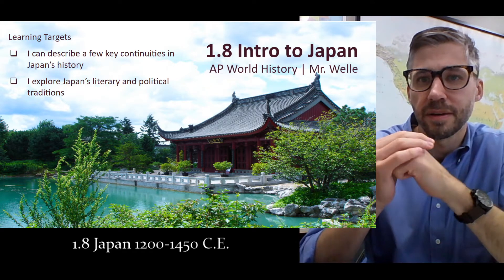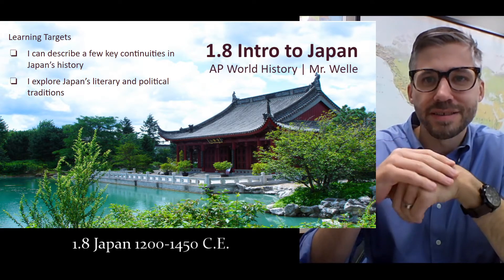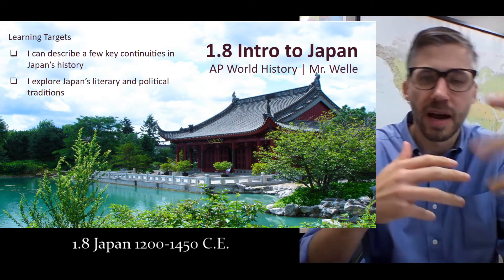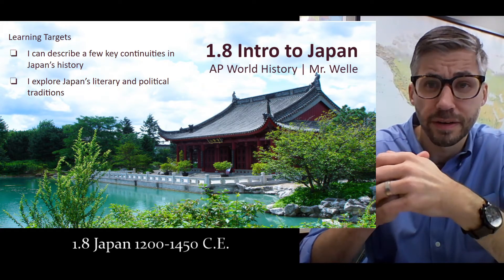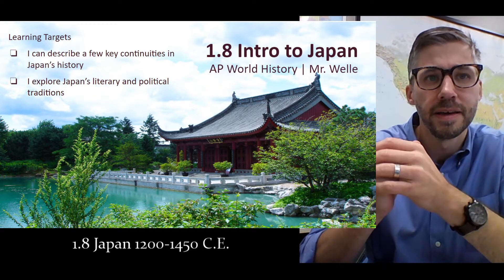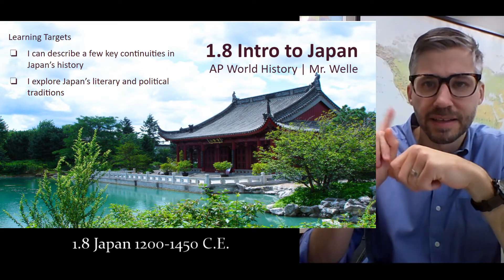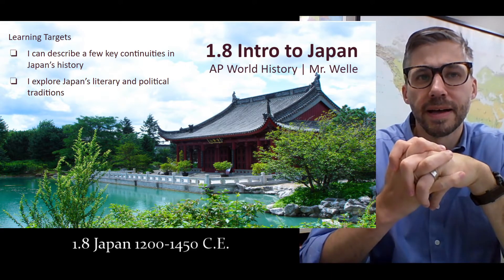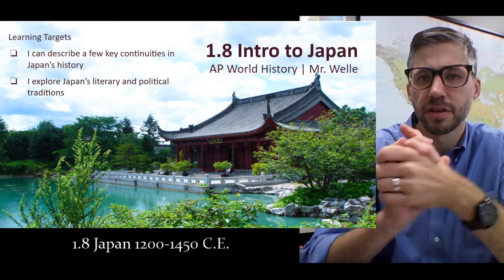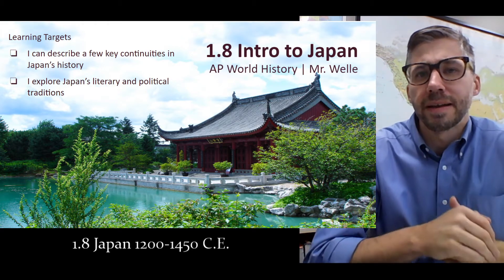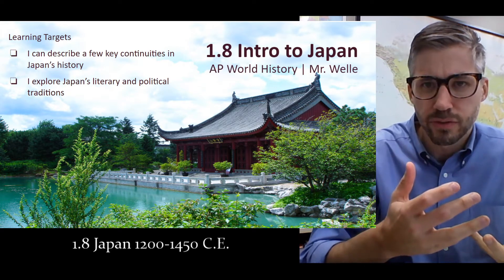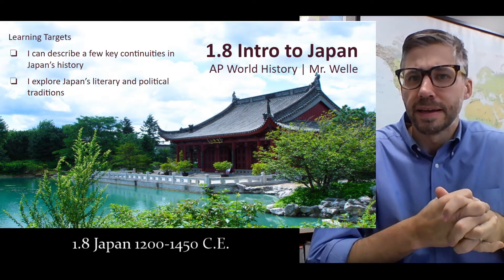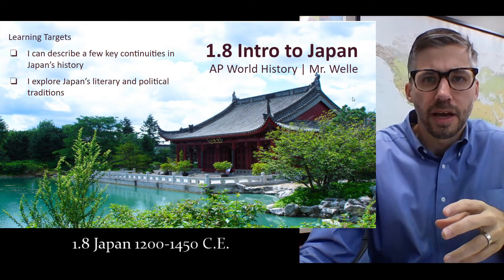We will get to see some lovely novelties and unique pieces. We're also going to see some connections with China, perhaps with Southeast Asia, even some similarities to Western Europe in certain ways. We're going to have our eye on continuities throughout Japan's history, and we're going to be looking a lot at literary and artistic tradition. That's a framework for the stuff we're going to learn here in lesson 1.8. Let's jump in.